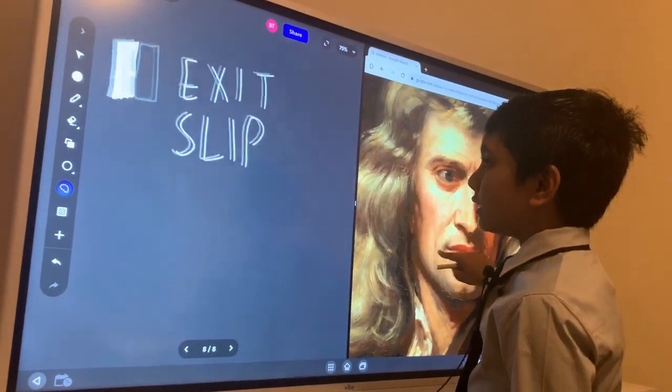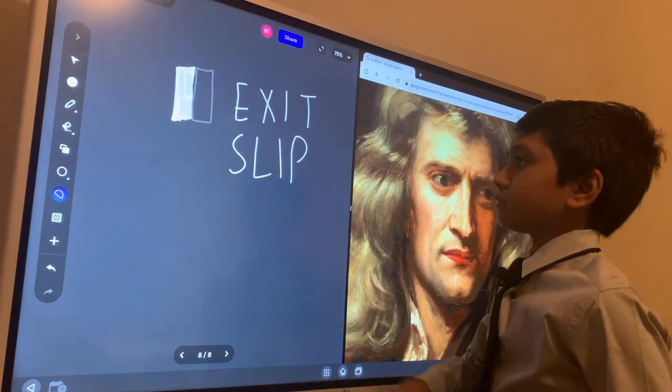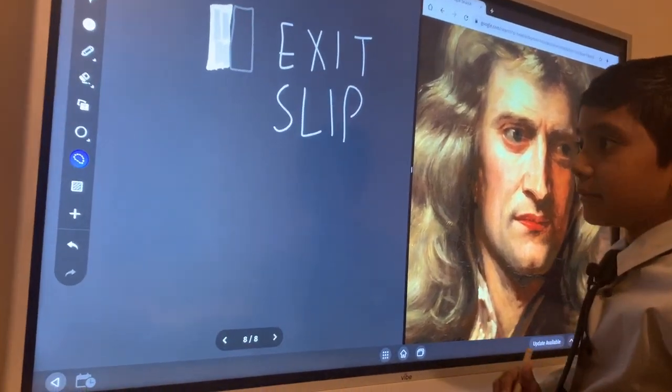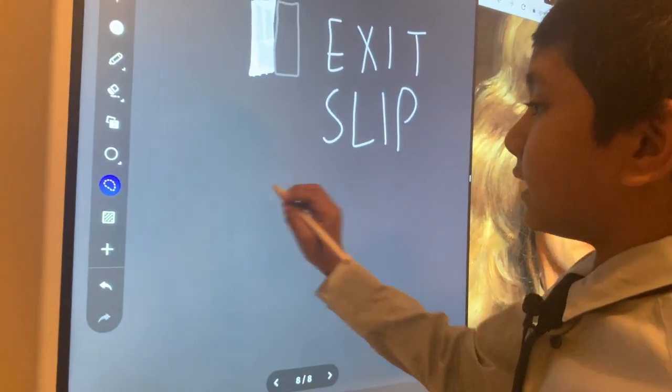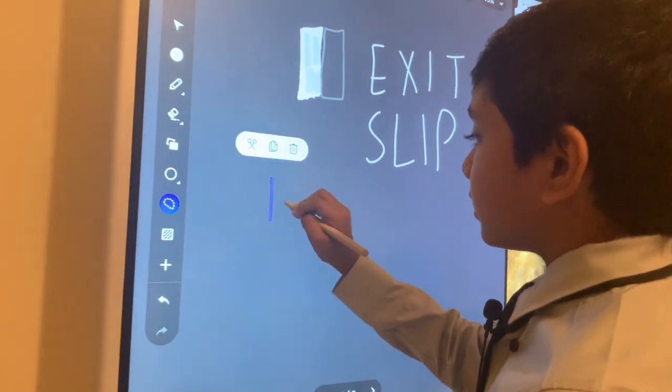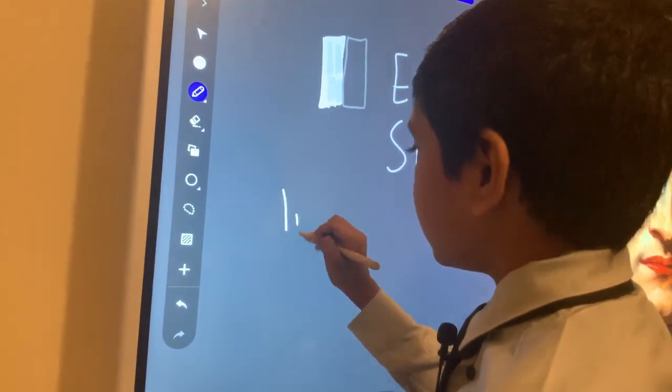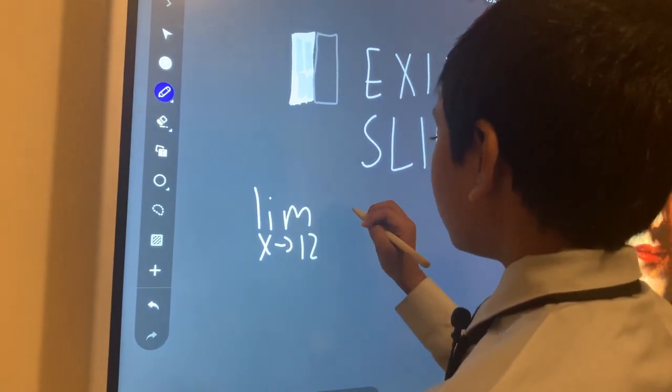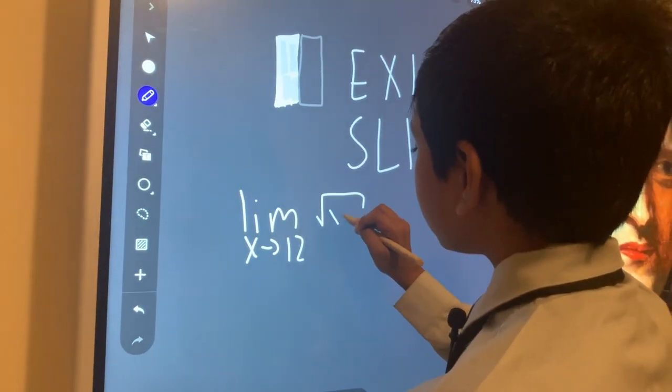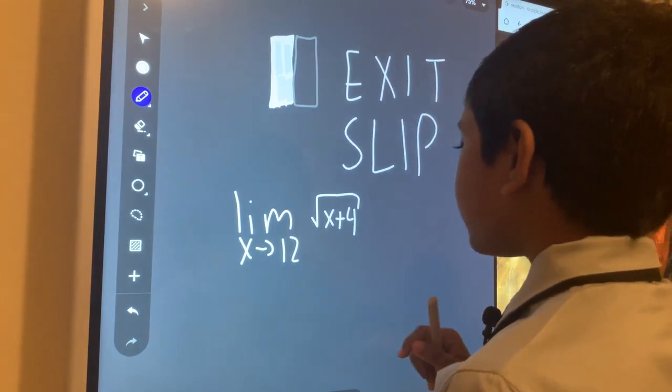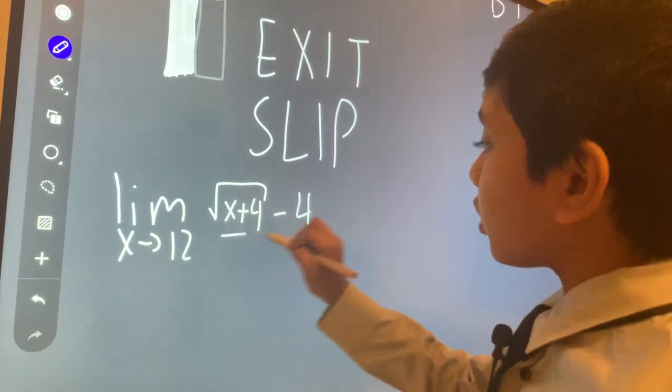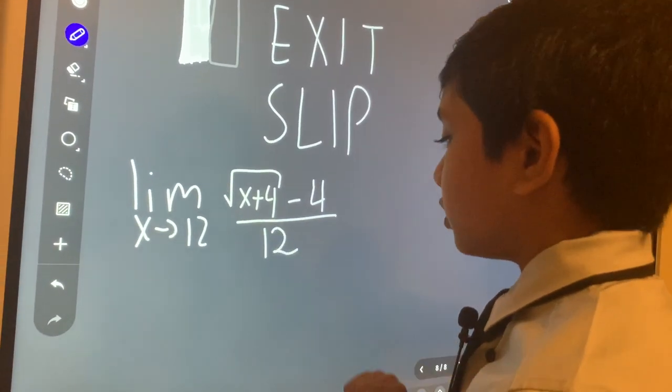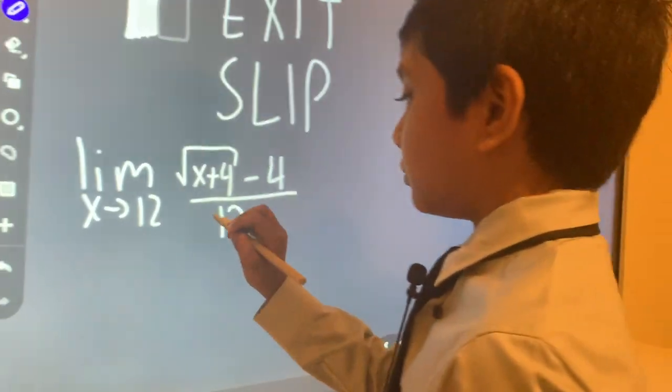All right. So here is our exit slip. Our exit slip for today is this equation. Oh God. The limit as x approaches 12 of the square root of x plus 4 minus 4 divided by... Oh, x minus 12.